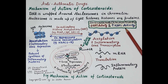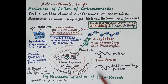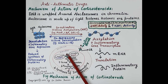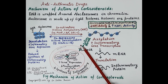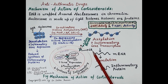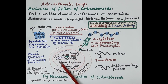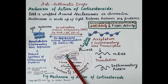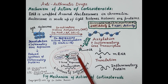Looking at the cell diagram: the outermost is the cytoplasm and inside is the nucleus. The glucocorticoid (shown in red) penetrates the cell membrane, reaches the cytoplasm, and binds to the glucocorticoid receptor. This complex then translocates to the nucleus, where it binds to coactivators as well as co-repressors.